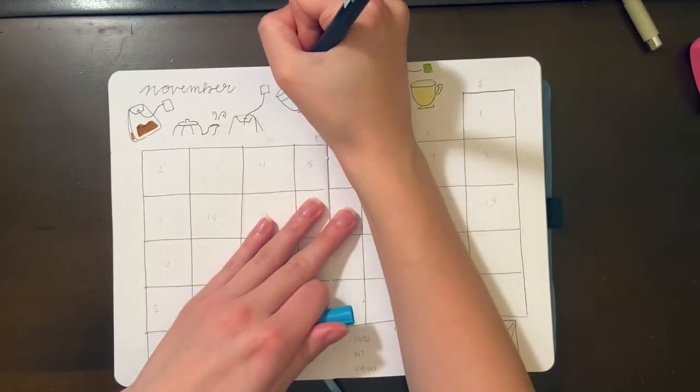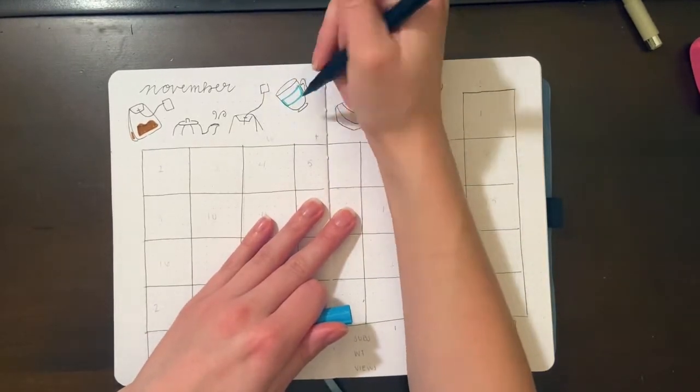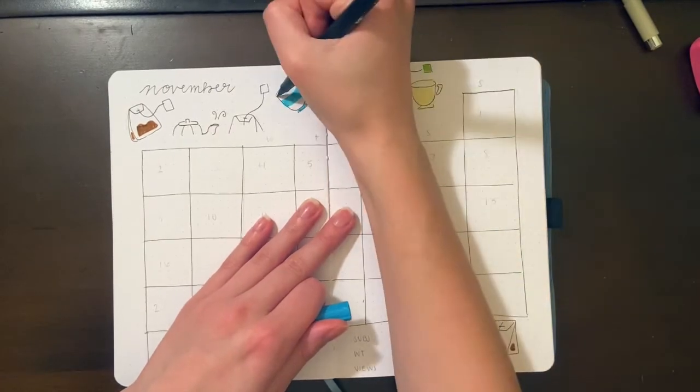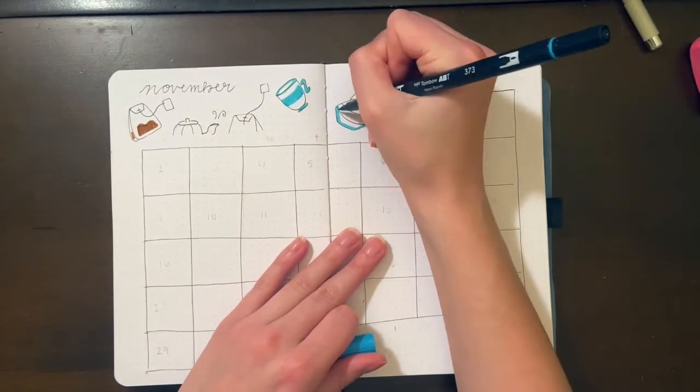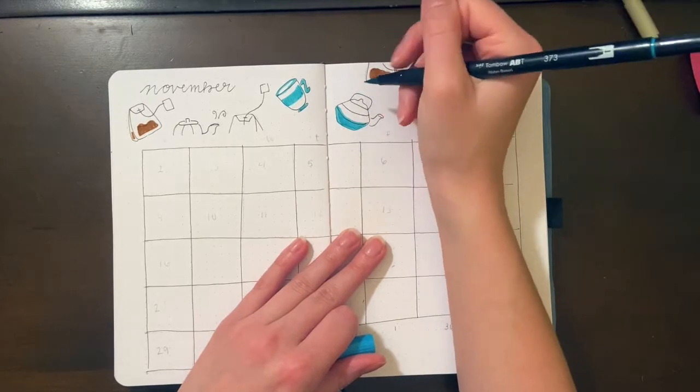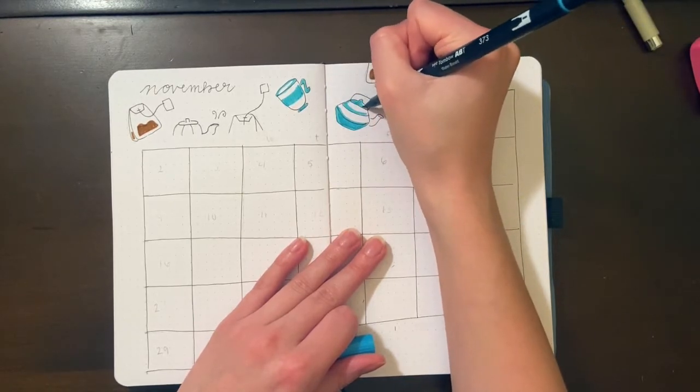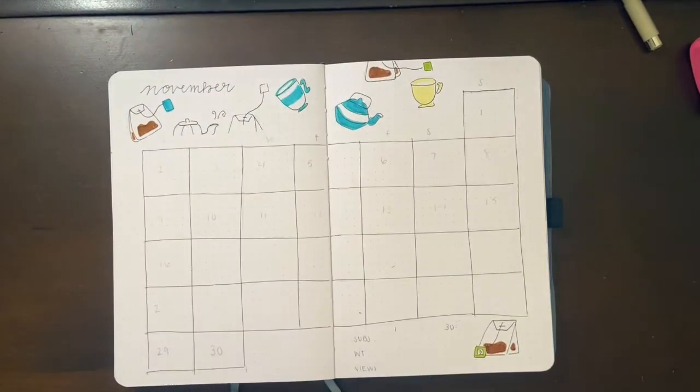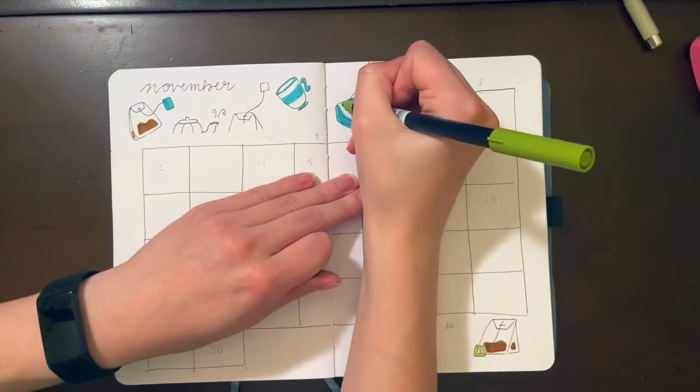For the mugs, to keep them looking different from one another and keep the spreads more interesting, I used the same basic shapes for all of them, but I would make some wider and fatter, some shorter, some taller, and I wouldn't always add the little base on the bottom. I also changed up the shape of the handle, some of them being a C and some looking more like an S.